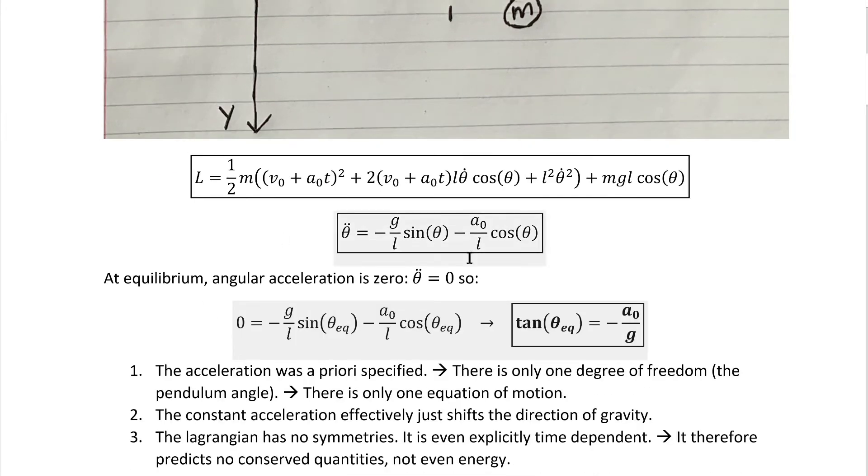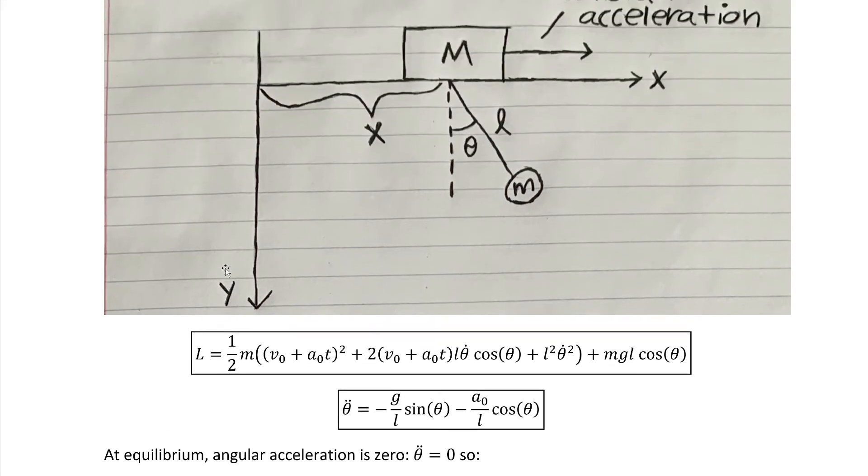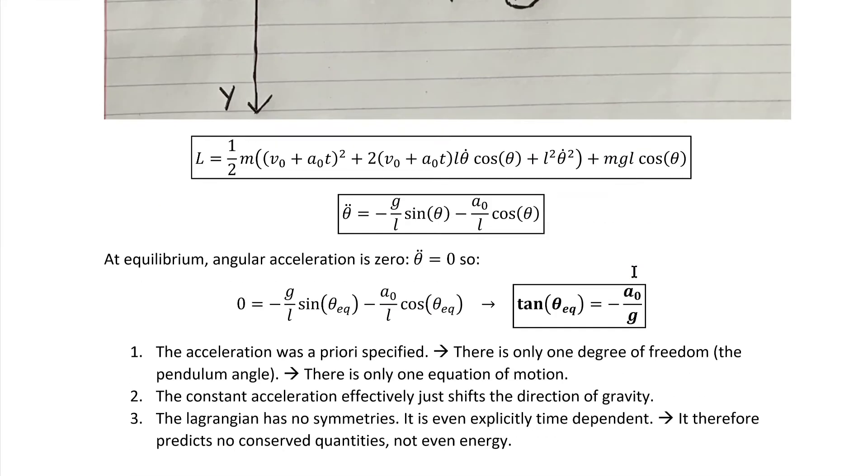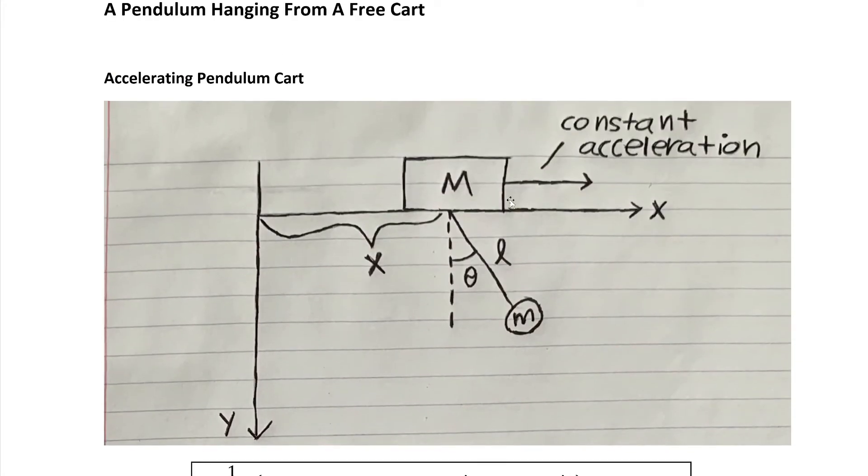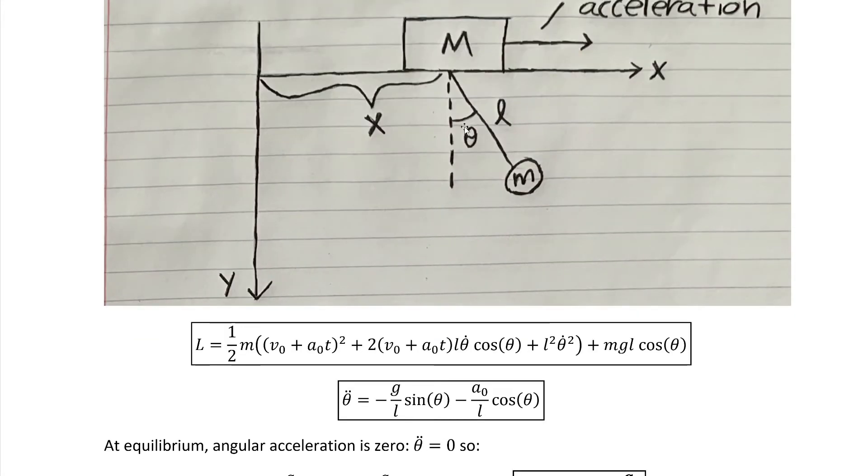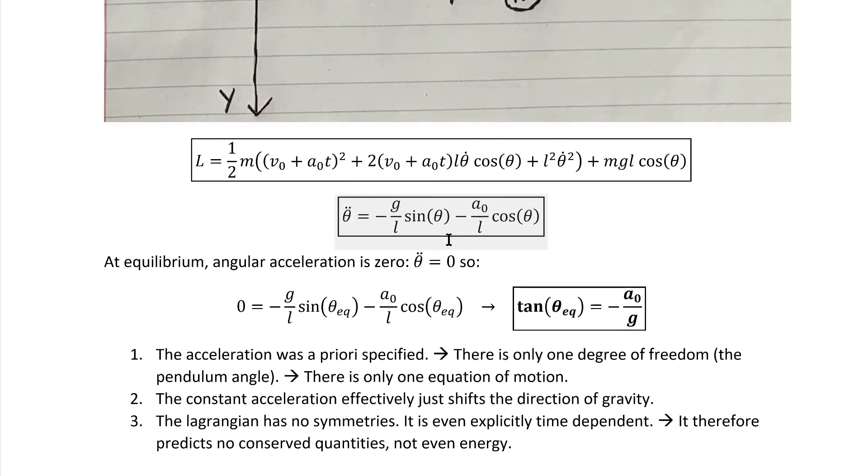Now there's a number of things to notice about this problem. The first is that we only have one equation of motion and one degree of freedom, despite having two objects moving. That's because the acceleration of the block was a priori specified, so that leaves us with only one degree of freedom—this pendulum angle here—and therefore only one equation of motion.